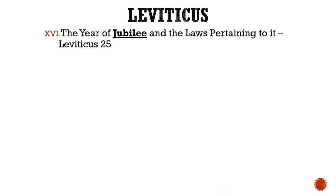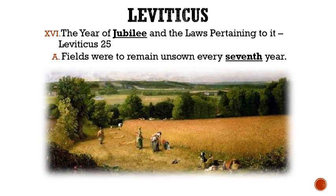Roman numeral 16: The year of Jubilee and the laws pertaining to it are given in Leviticus 25. Letter A: Fields were to remain unsown every seventh year. The fields were to be sown for six years, but on the seventh they were to be left alone as a Sabbath of rest. In fact, nothing that grew in the field during that year was even to be eaten.